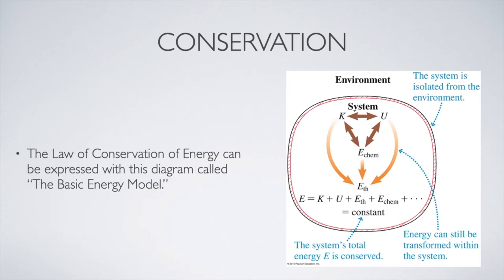This is expressed in a diagram which your textbook calls the basic energy model. You can see a system boundary with transformations represented by arrows inside: kinetic energy transforming into potential energy or vice versa, chemical energy transforming into kinetic or potential, and all of those forms transforming back and forth with thermal energy. The total energy of the system, expressed as the sum of all the different kinds, remains constant if the system is isolated from its environment.